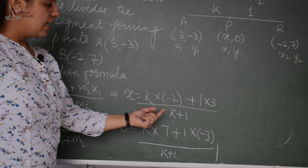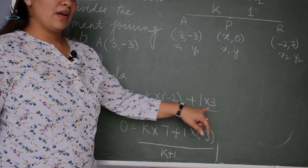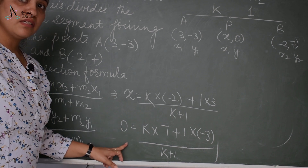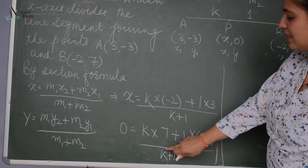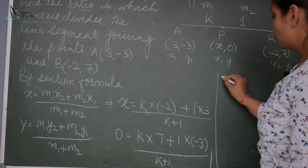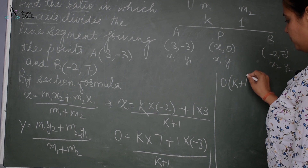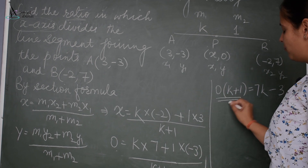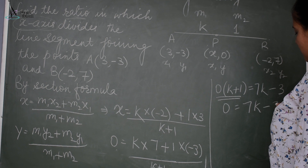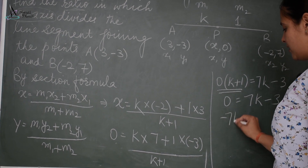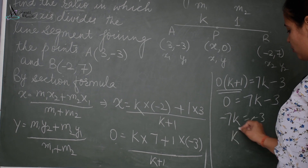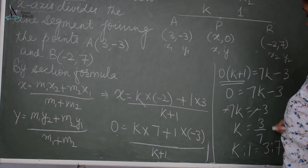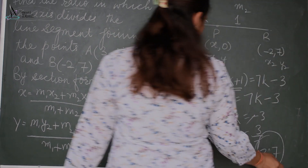We can find the value of k from the y-coordinate equation since the left side is 0. Cross-multiplying: 0 = 7k − 3, so k = 3/7. Therefore k:1 = 3:7, meaning the ratio is 3:7.